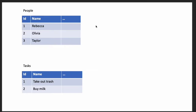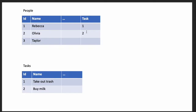I want to explain what those consequences are, so I'm going to move into a slightly more schematic format. I've redrawn these tables leaving out a lot of detail. If I add the foreign key field to the people table, I can say Rebecca is going to take out the trash and Olivia is going to buy milk. But I cannot say that Rebecca is going to both take out the trash and buy milk, because I cannot add two values to one field.